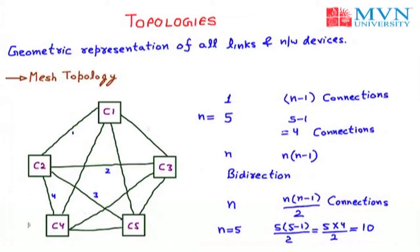You can count all 10 connections: 1, 2, 3, 4 already mentioned — then C1 to C3 is 5, C3 to C5 is 6, C1 to C5 is 7, C4 to C1 is 8, C4 to C5 is 9, and C4 to C3 is 10. So the formula is: for N nodes, we have N into N minus 1 by 2 connections.